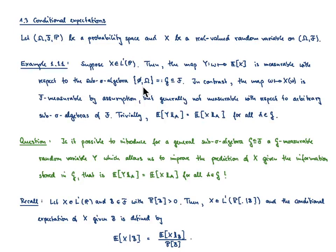Imagine you would like to predict X but have no information at all. Then at least you can compute its expectation value — that's one prediction. On the other hand, if you have all information, meaning someone gives you a precise ω, then you know the value of X, namely x(ω). The idea is: can we come up with a notion that includes some intermediate information, where we average out certain events without knowing ω exactly?